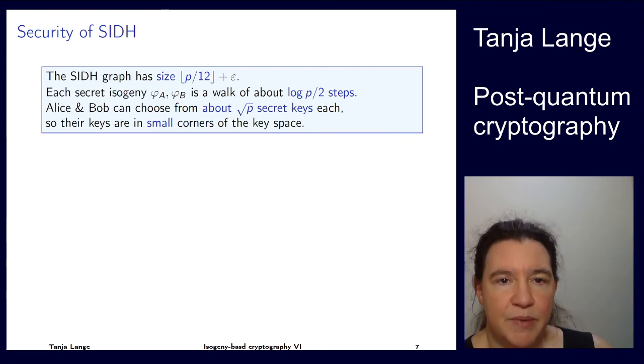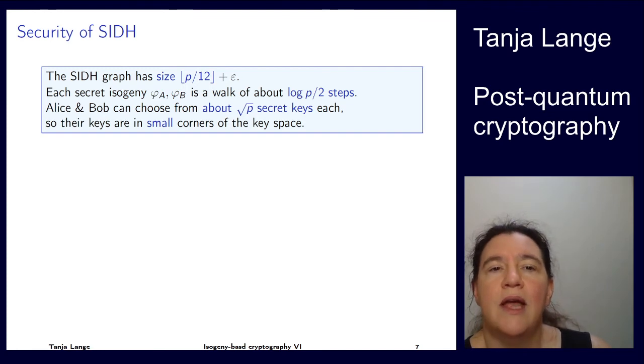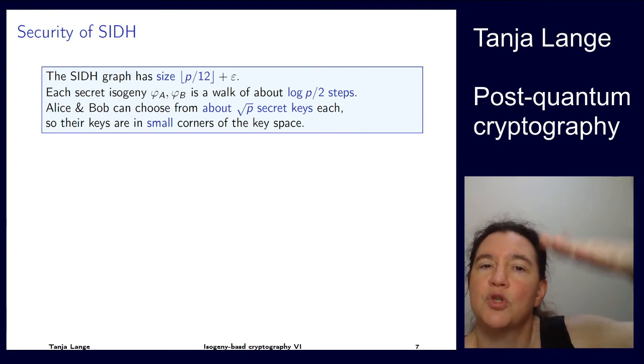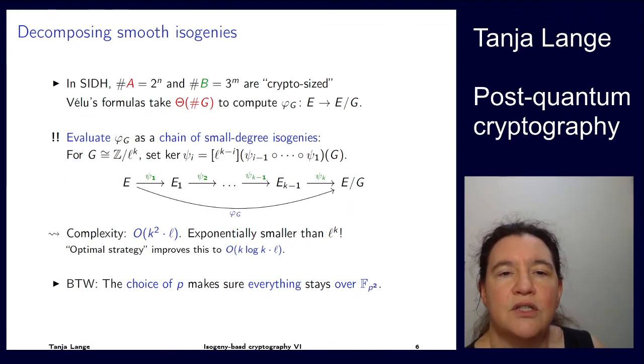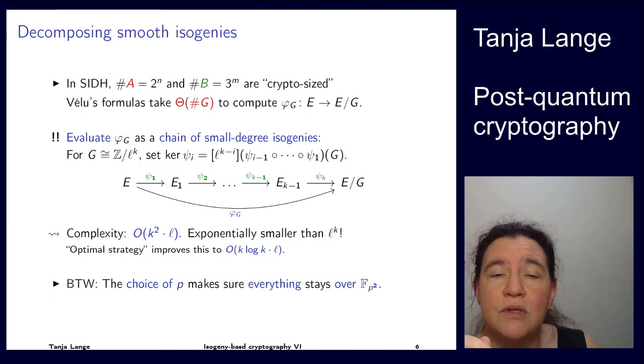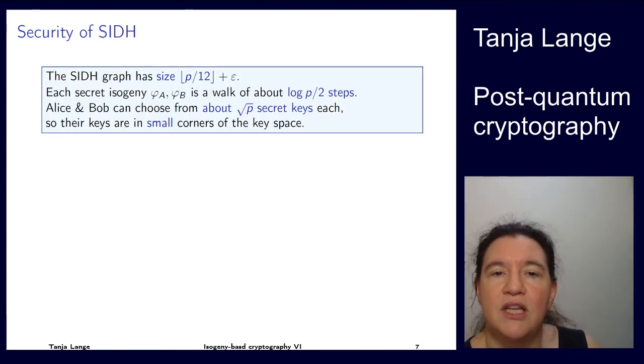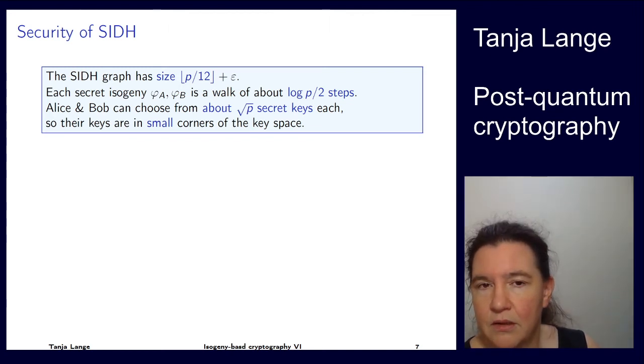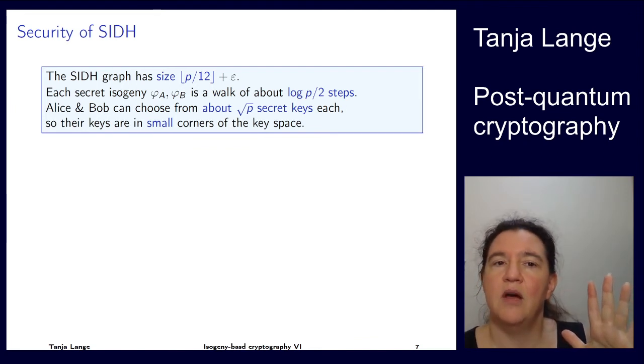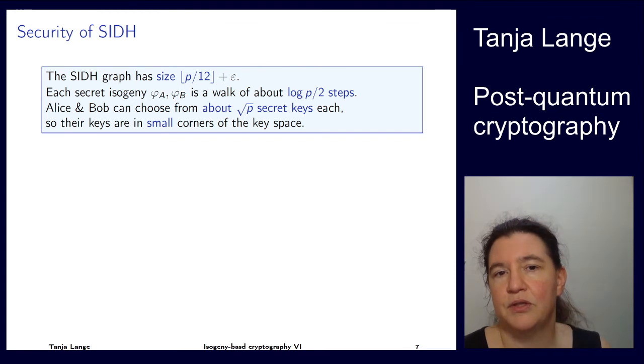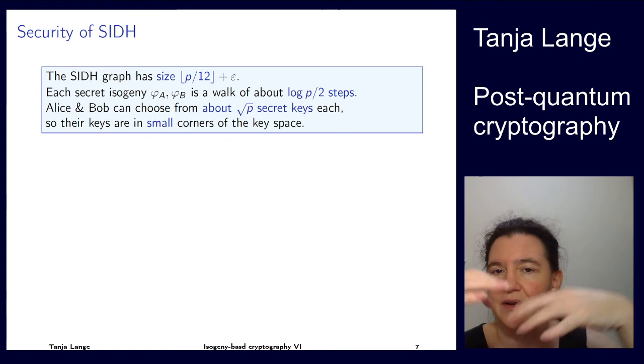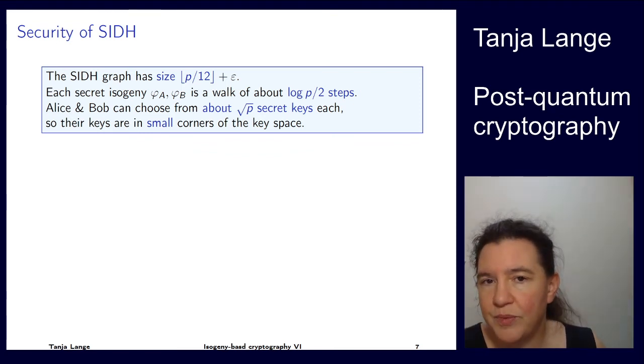Okay, so security. How big is our key space? For C-SIDH, I was saying it's square root of p, and here it's similar to what we have there. So you have p squared, that's the square root of that. So it's just something of size p. And actually it's pretty precise: p over 12, round it down, and then there's some epsilon. However, each of these walks that they're doing, so Alice is doing 2 to the n, Bob is doing 3 to the m, and remember that p was 2 to the n times 3 to the m. So that means they're actually reaching only square root of p many keys. So the number of different curves in this graph is p, but each of them can only reach square root of p. So in some sense, it's only a small corner of the key space.